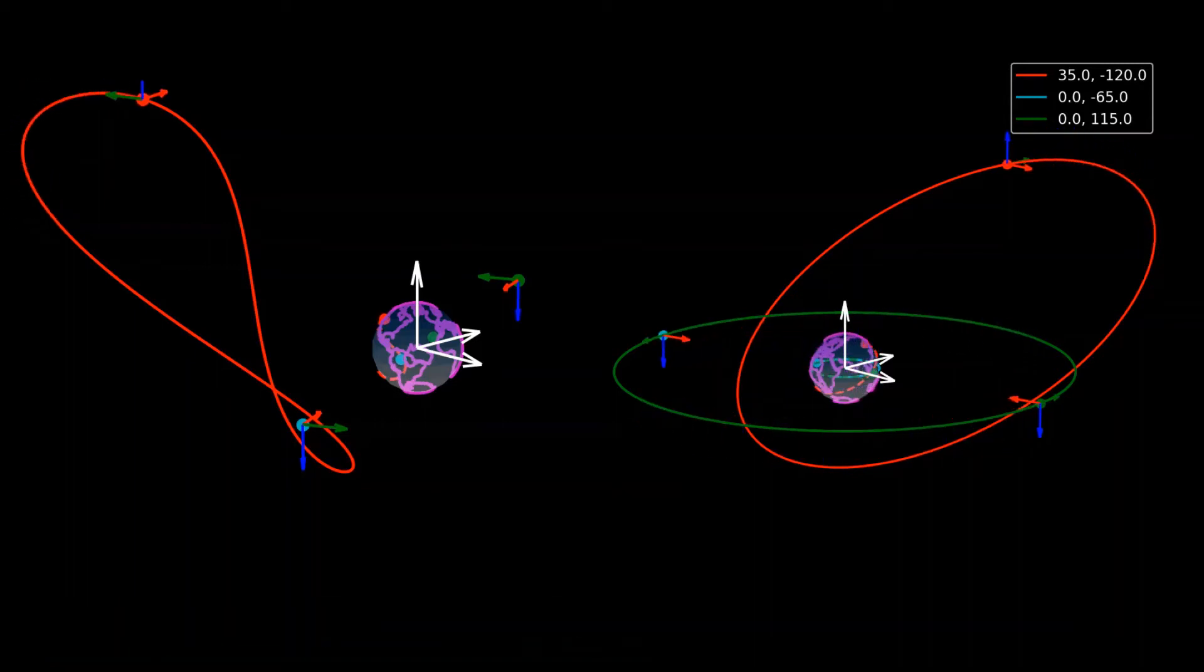These animations show three different geosynchronous orbits, where two of them are circular with zero inclination, making them a special case of geosynchronous orbit called geostationary orbit, where they are stationary with respect to the surface of the Earth.